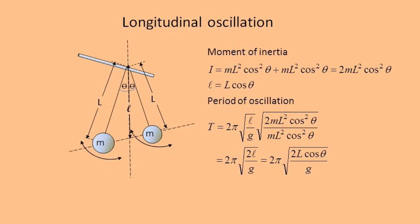Secondly, for swinging along the axis, or longitudinal oscillation, the moment of inertia depends on cos θ. And the period is now 2π√(2l cos θ/g).